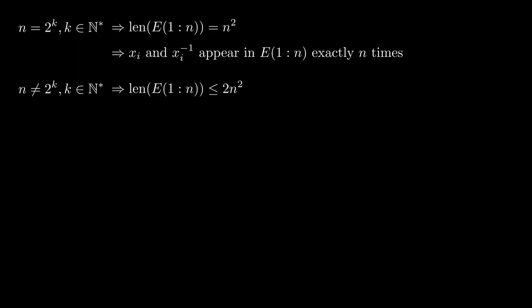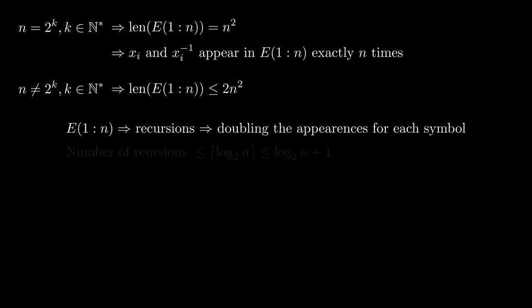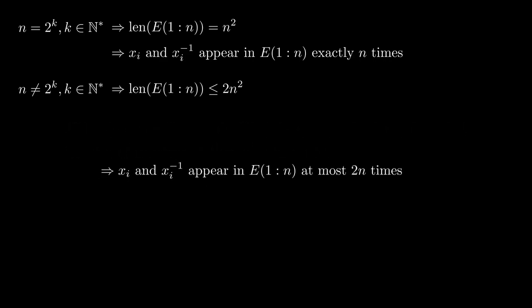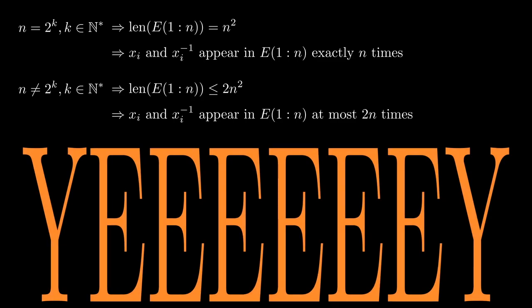To calculate the number of appearances of x sub i and x sub i inverse, we will use that e from 1 through n is built using multiple recursions which double the appearances of each symbol. In addition to that, because every recursion splits the interval into 2 intervals with the same length, we have at most log base 2 of n plus 1 recursions. Now we can easily calculate the number of appearances for each symbol. In conclusion, we finally obtained an efficient answer for the n-nail puzzle, thus achieving our goal.